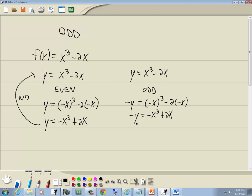Well, if I multiply both sides by negative 1. Multiply everything by negative 1, I should say. I'll go ahead and multiply it through. Negative 1 times negative y is y. Negative 1 times a negative x to the third is x to the third. And negative 1 times 2x gives you a negative 2x.